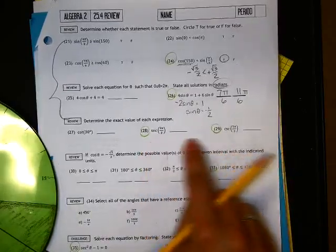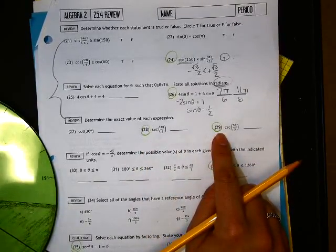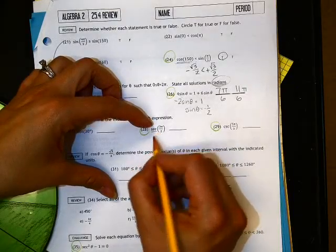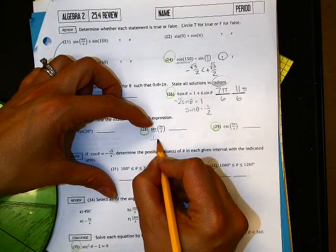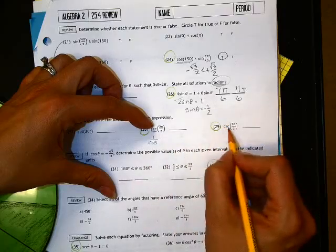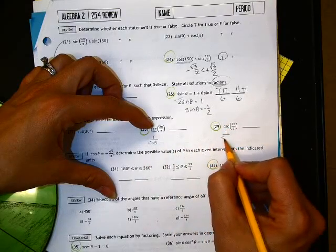All right, let's look at these guys here. So these guys here are really just, do you know what the rules are? Secant is the flipping of the cosine, and cosecant is the flipping of the sine.